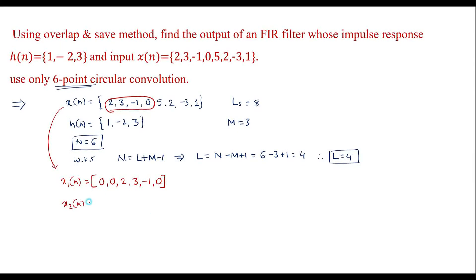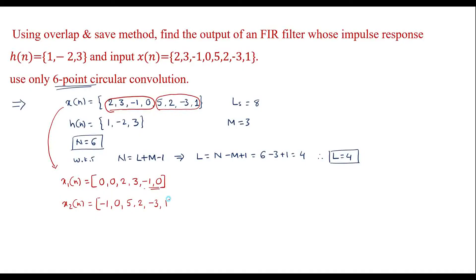The second sub-block x2 of n consists of the last M minus 1 samples of x1 of n — that is the last 2 samples: minus 1, 0 — followed by the next L new samples of x of n, which are 5, 2, minus 3, and 1. So x2 of n is: minus 1, 0, 5, 2, minus 3, 1.